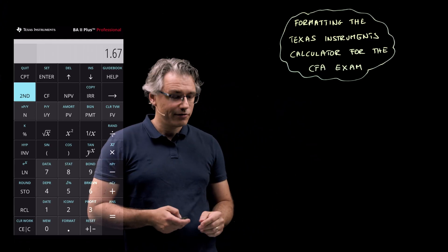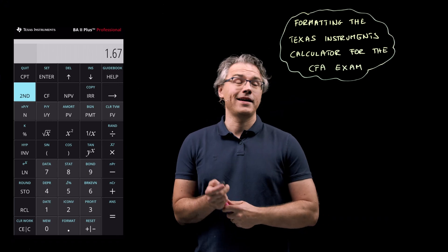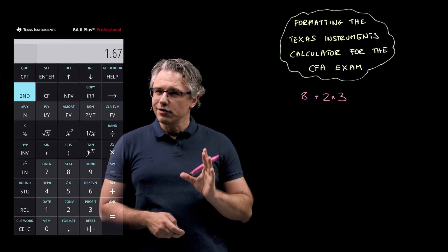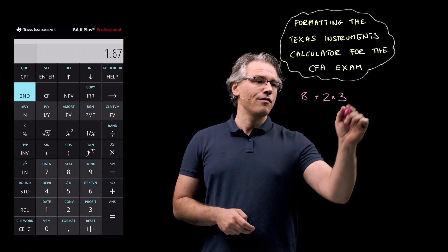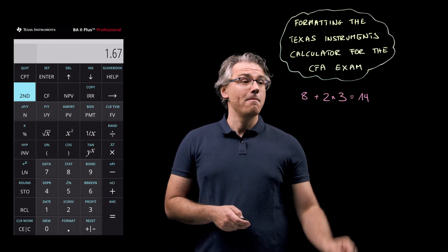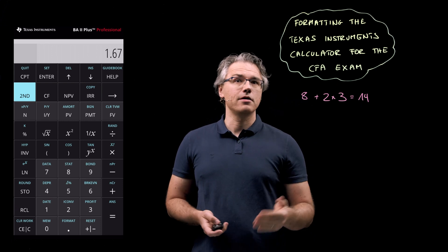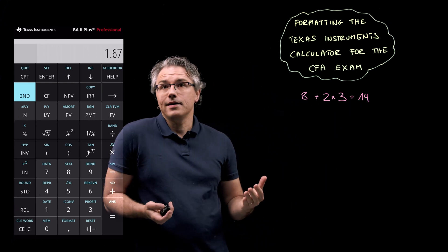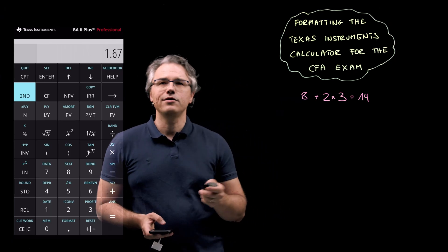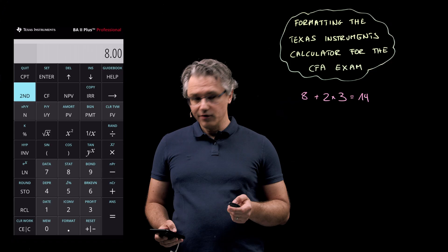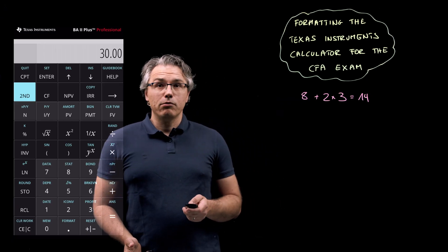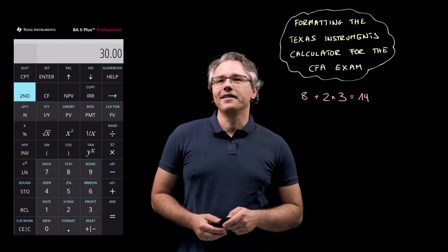Before we actually do that, I just want you to perform a simple operation: 8 plus 2 times 3. It should be obvious that the answer ought to be 14. After all, the rules of algebra require us to perform multiplication ahead of addition — first multiply 2 times 3 to get 6, and then add the 8. However, if you try to input this sequence into your calculator — 8 plus 2 times 3 — and press the equals key, you will most probably see the calculator displaying an answer of 30.